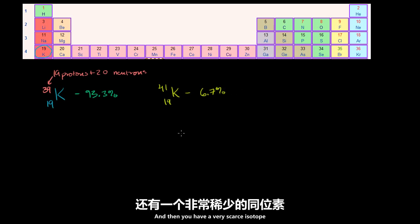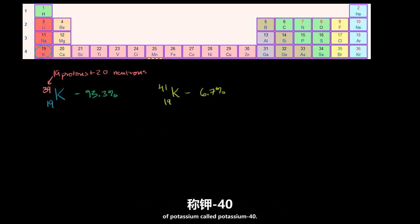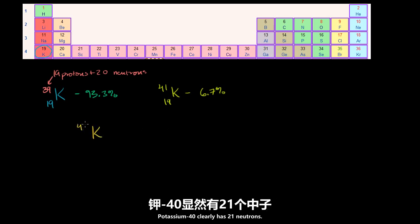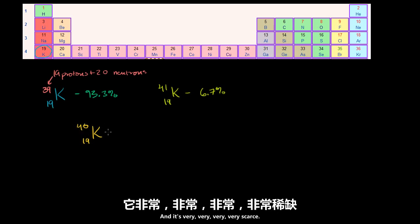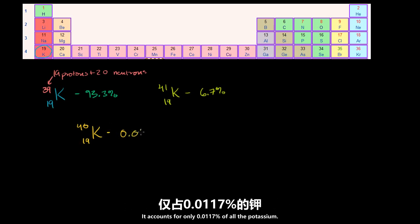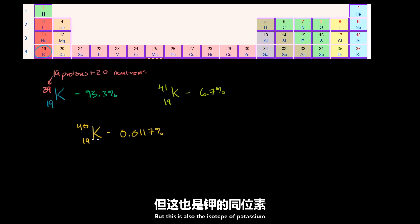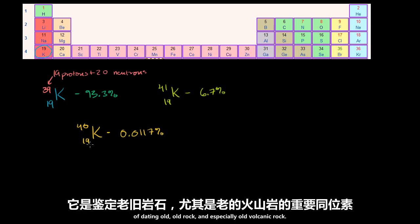And then you have a very scarce isotope of potassium called potassium-40, which has 21 neutrons. It is very, very scarce — it accounts for only 0.0117% of all potassium. But this is also the isotope of potassium that's interesting to us from the point of view of dating old, old rock, and especially old volcanic rock.